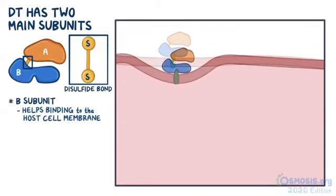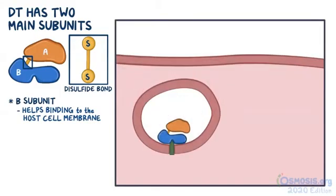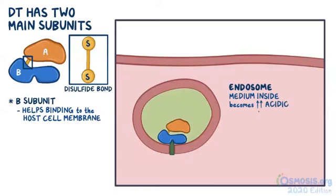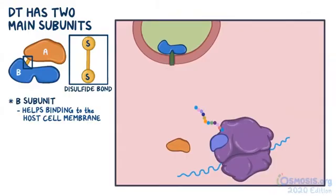After attaching to the host cells, the whole DT complex gets slowly engulfed by the cell membrane, which invaginates to form a sac on its inner side. The sac then separates from the actual cell membrane, forming a vesicle called an endosome. Within the host cell's cytoplasm, the medium inside the endosome becomes more acidic, and as a consequence, the disulfide bond holding the two subunits together becomes weak and eventually breaks, separating the subunits. The A subunit then diffuses through the endosome membrane into the cytoplasm, where it goes straight to the ribosomes.